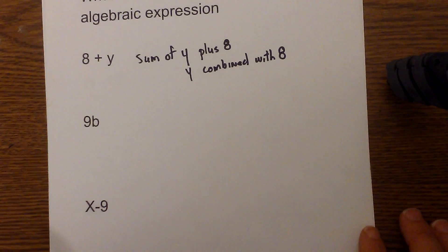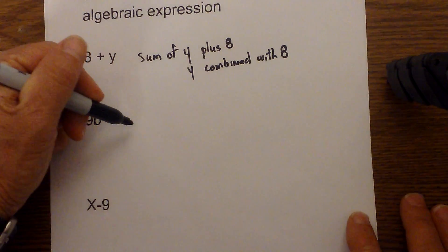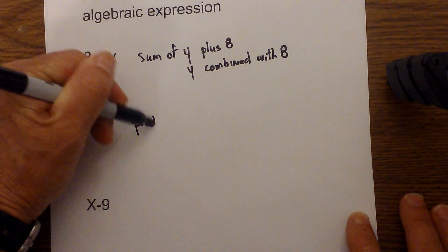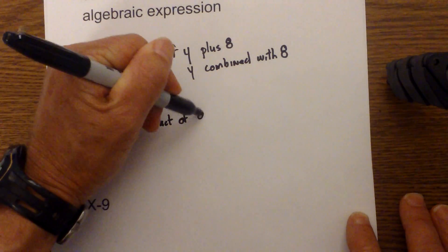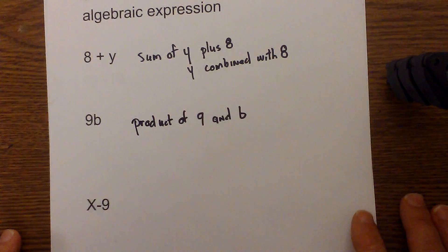Next, let's move down to 9b. With 9b I'm going to use the word multiplication. A lot of time 'product' is used, so I'm going to use the product of 9 and b.